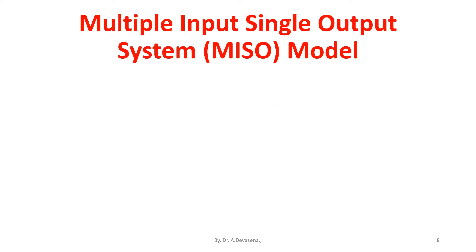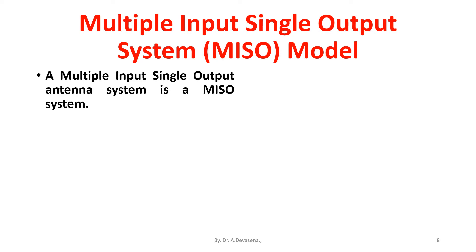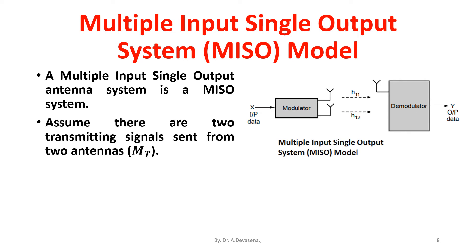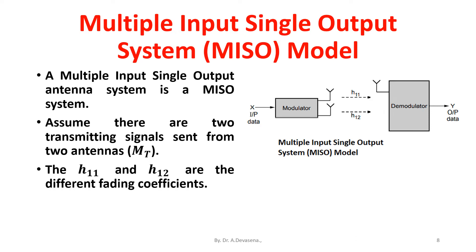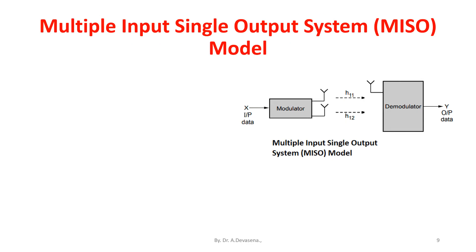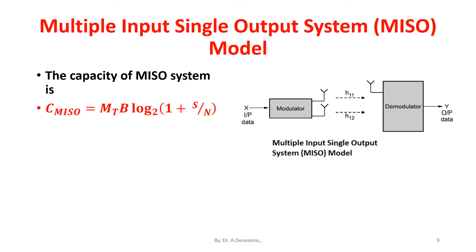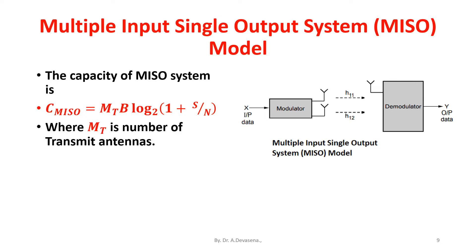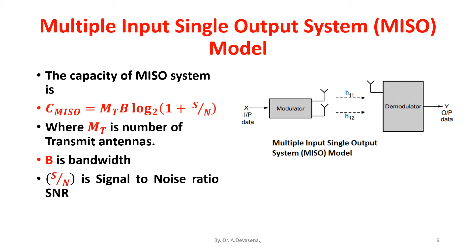Multiple input single output system — MISO model: A multiple input single output antenna system is a MISO system. Assuming there are two transmitting signals sent from two antennas M_T, H11 and H12 are the different fading coefficients. The capacity of the MISO system is: C_MISO = M_T × B × log₂(1 + S/N), where M_T is the number of transmit antennas, B is the bandwidth, and S/N is the signal to noise ratio.